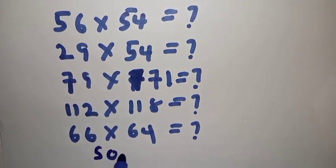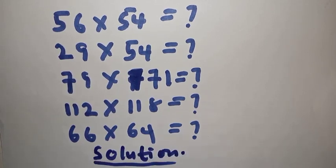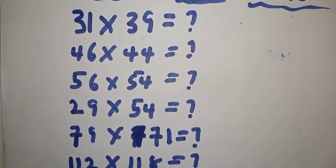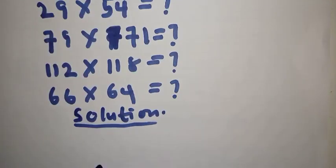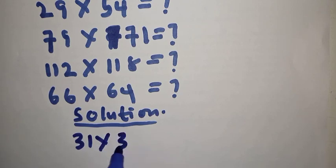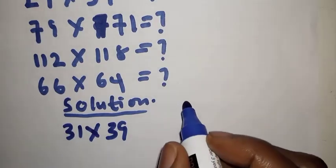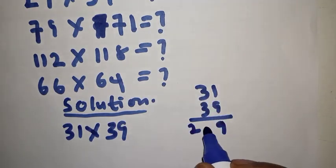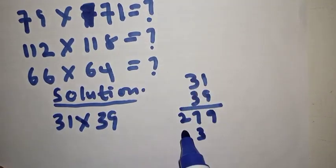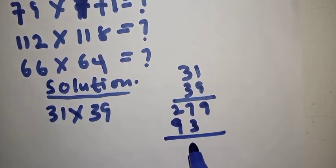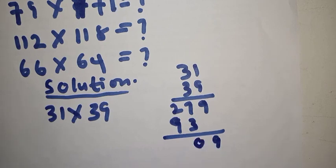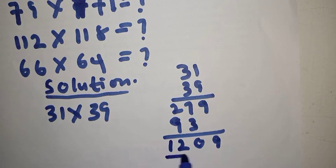Let's look at how to multiply very fast. Take 31 multiplied by 39 as our example. The general way we know is: 9×1=9, 9×3=27, then 3×1=3, 3×3=9, and we add them up — 9, then 7+3=10 (write 0 carry 1), 9+2+1=12. So 31×39=1209, but you can see this is a long method.